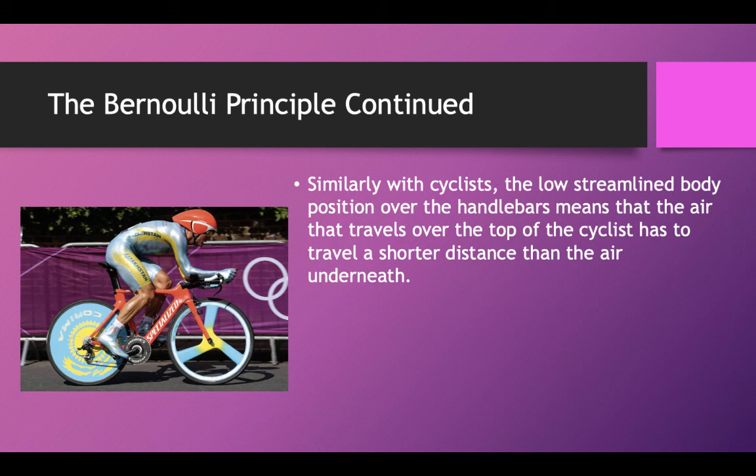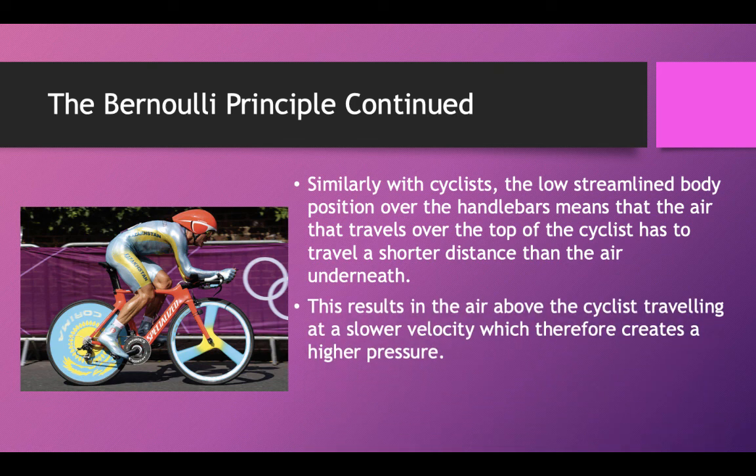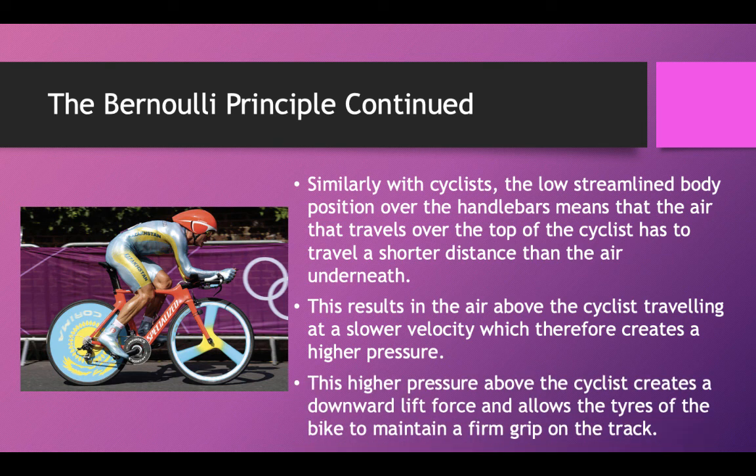Similarly, with cyclists, the low streamlined body position over the handlebars means the air that travels over the top of the cyclist has to travel a shorter distance than the air underneath. This results in the air above the cyclist travelling at a slower velocity, which creates a higher pressure. This higher pressure above the cyclist creates a downward lift force and allows the tyres of the bike to maintain a firm grip on the track.